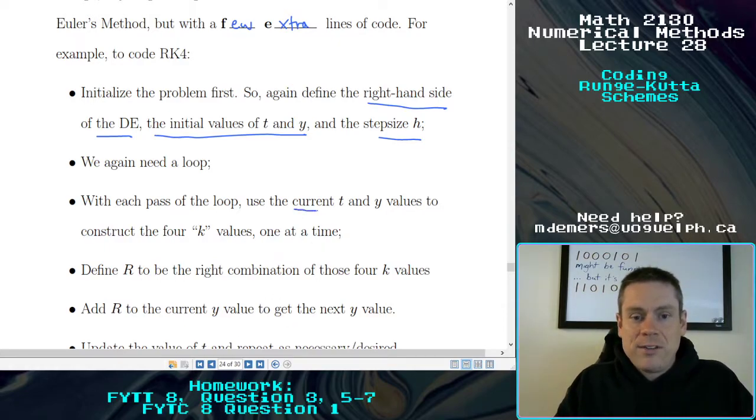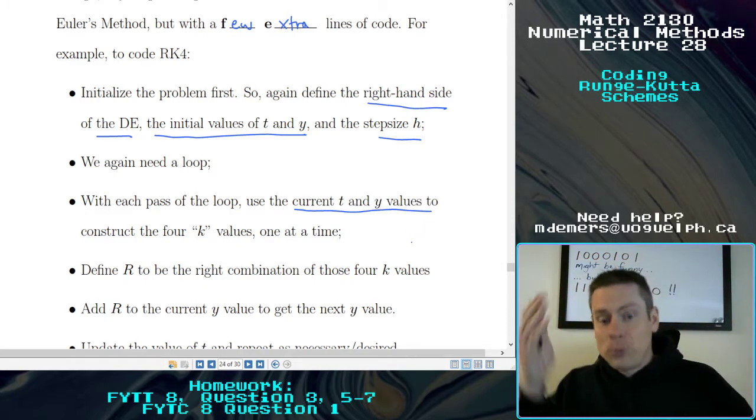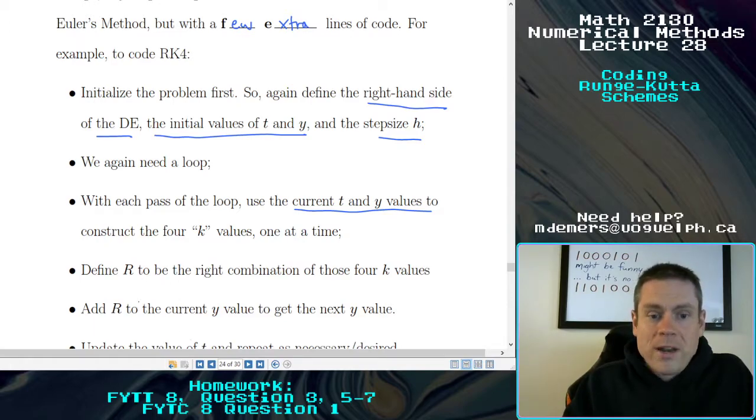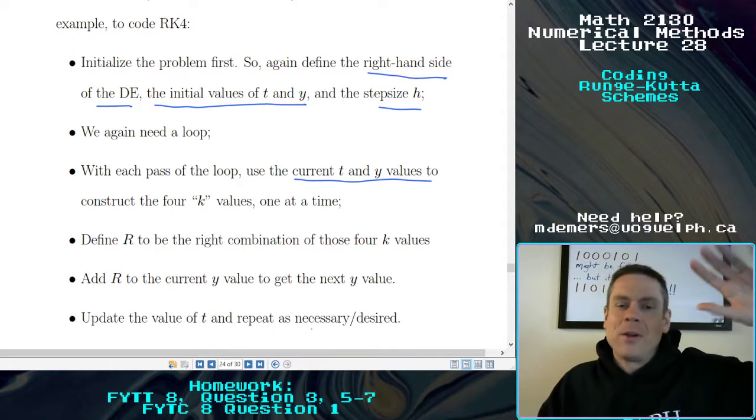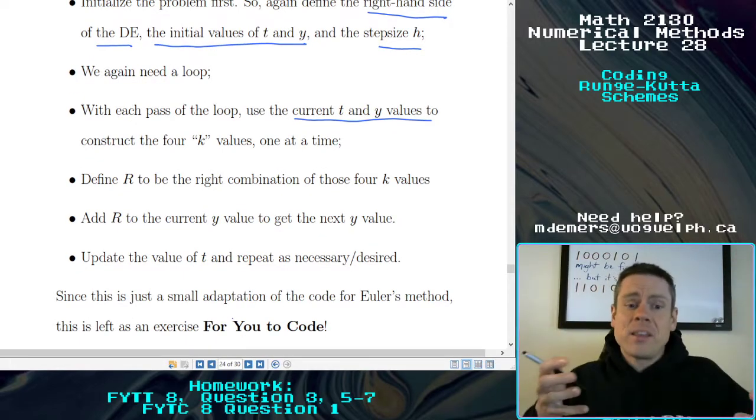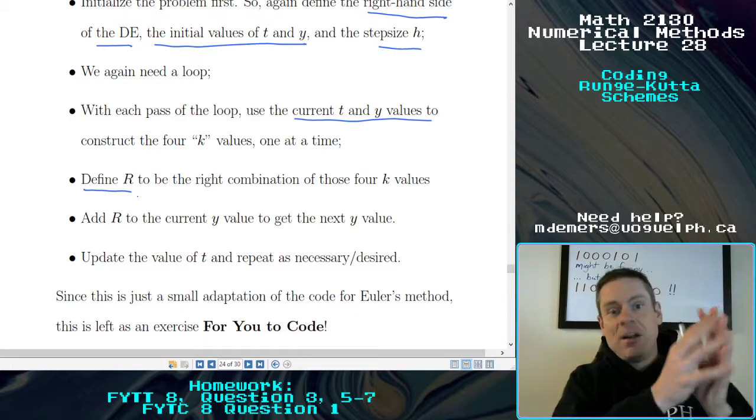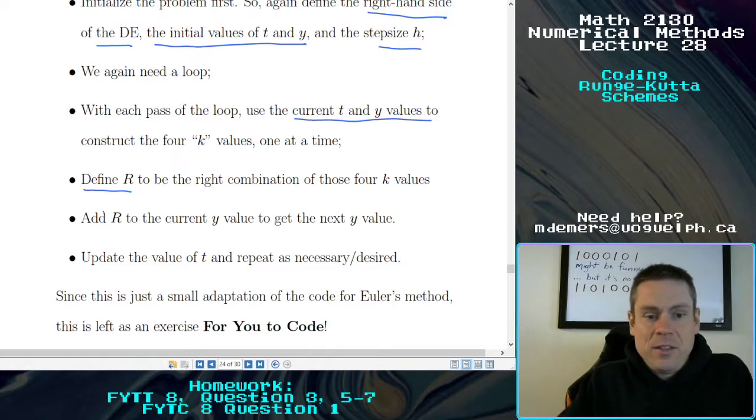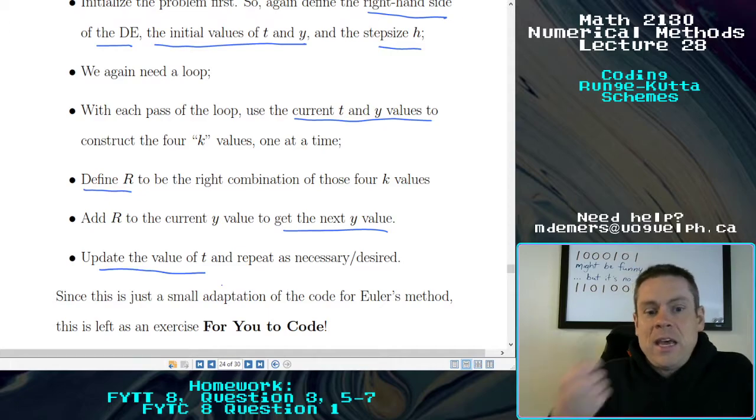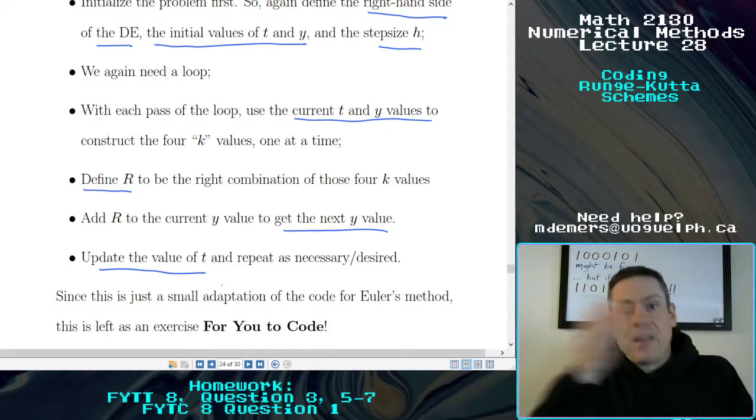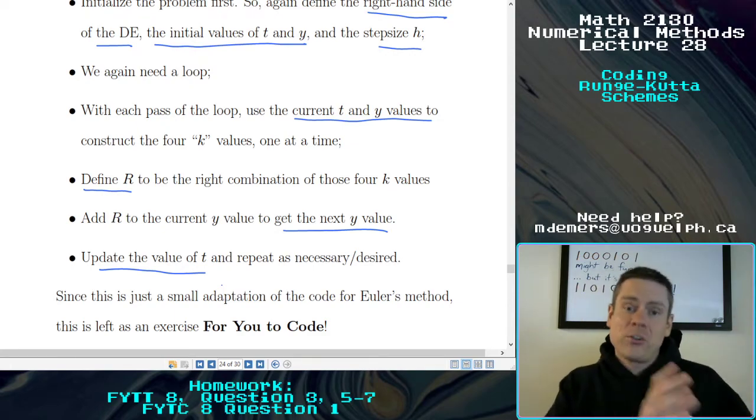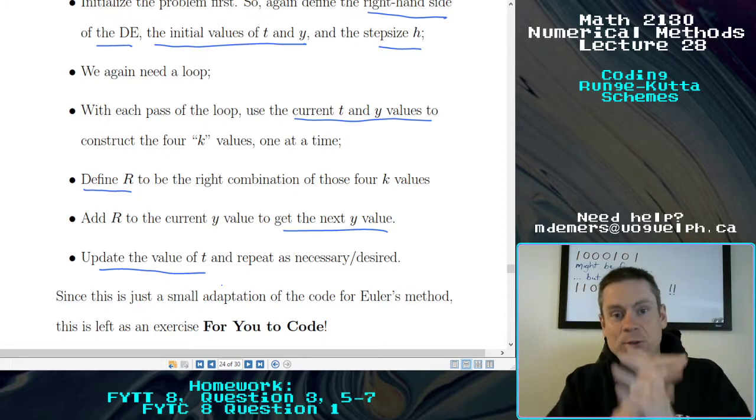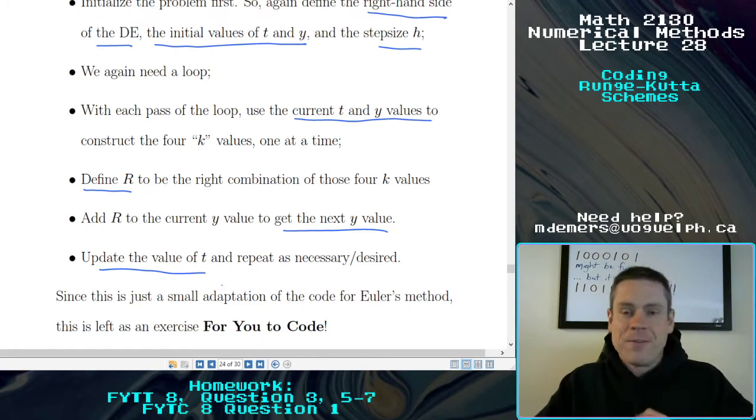And with every step of the loop, we're going to use whatever the current t and y values are. So the initial conditions to start, that'll give us a new estimate in the future. Those will become our new current and so on. And we'll construct those four different k values that define the Runge-Kutta method, the RK4 method, one at a time. Each one subsequently depending on the one before it. Once you've got them all, define your R. Remember that R is just that linear combination of all the different estimates. And that's going to be the amount that we add to the previous y value to get the next one. And that's how you update the values of t and y through this step. And you repeat as necessary. Of course, the t value is going to be updated by the amount of the step size for the next step. So as long as you have some working Euler's method code, you can take that code and add in a couple of extra steps to construct multiple k values and use all of those in combination to find a new estimate for the next step and so on.